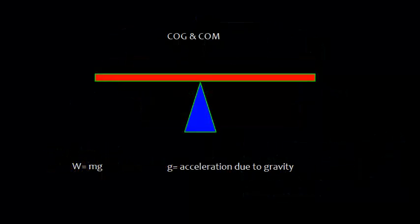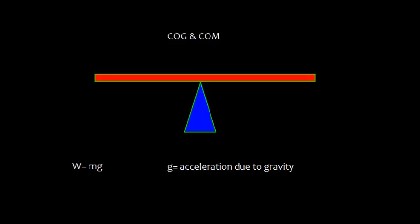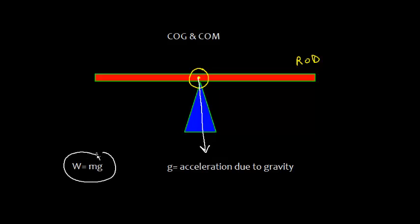Now let us discuss the concept of center of gravity and center of mass. Suppose this is a rod, and you can balance this rod at its center point. This gives the impression that the mass is concentrated at this point, and the weight will act vertically downward as W = mg, where m is the mass of the rod.